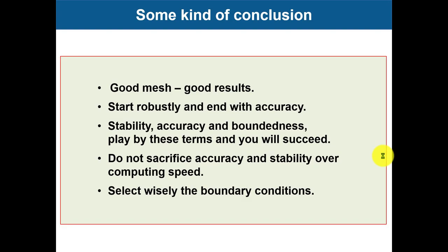Before moving to the next module, let's state some conclusions about what we have done so far — not only in Module 6 but also in previous modules. At this point it should be clear that good mesh equals good results. Start robustly and end with accuracy. You can start your solution using a coarser approach, but your final solution has to be at least second-order accurate.